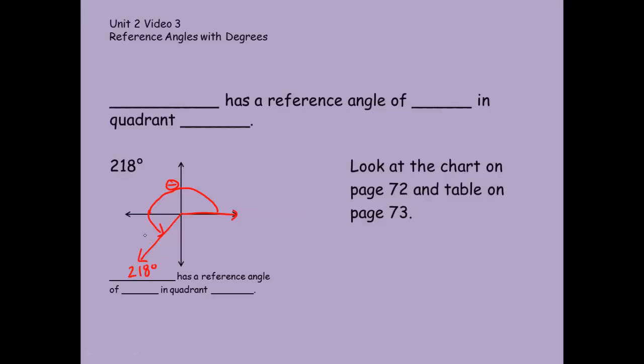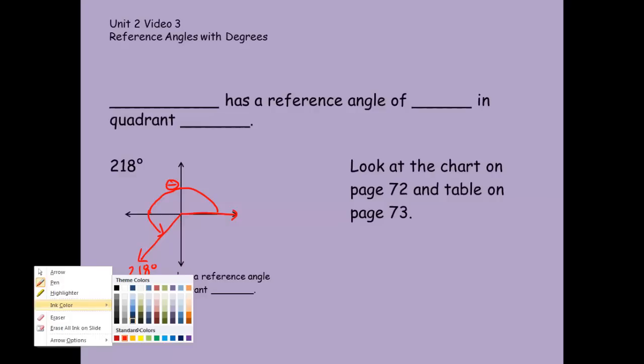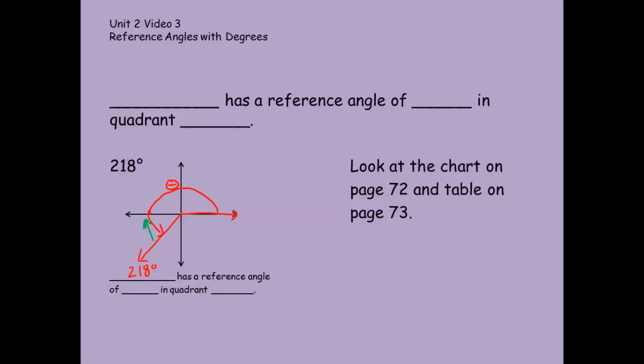Now, how far is it? It means I have to head back to the x-axis. I always, always go to the x-axis. How far is it to the x-axis? Well, I don't know. That's 218. The x-axis was 180. So that looks like it's 38 degrees. It's 38 degrees is the reference angle. And this is in quadrant 3.